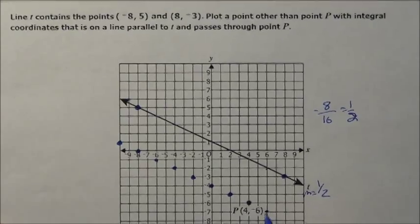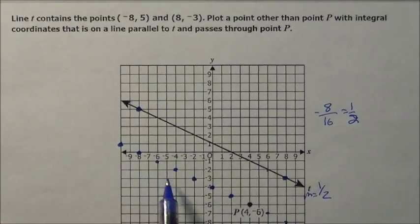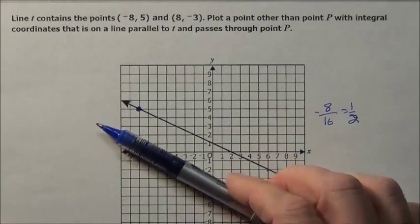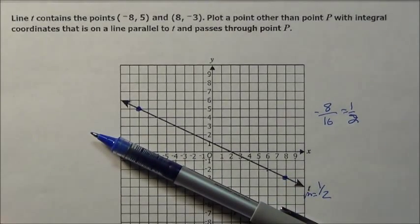And you also could drop and go over 2, drop, go over 2, drop, go over 2. You could do all these. Any of these points here would be points that would make this new line through point P parallel to the original line T.